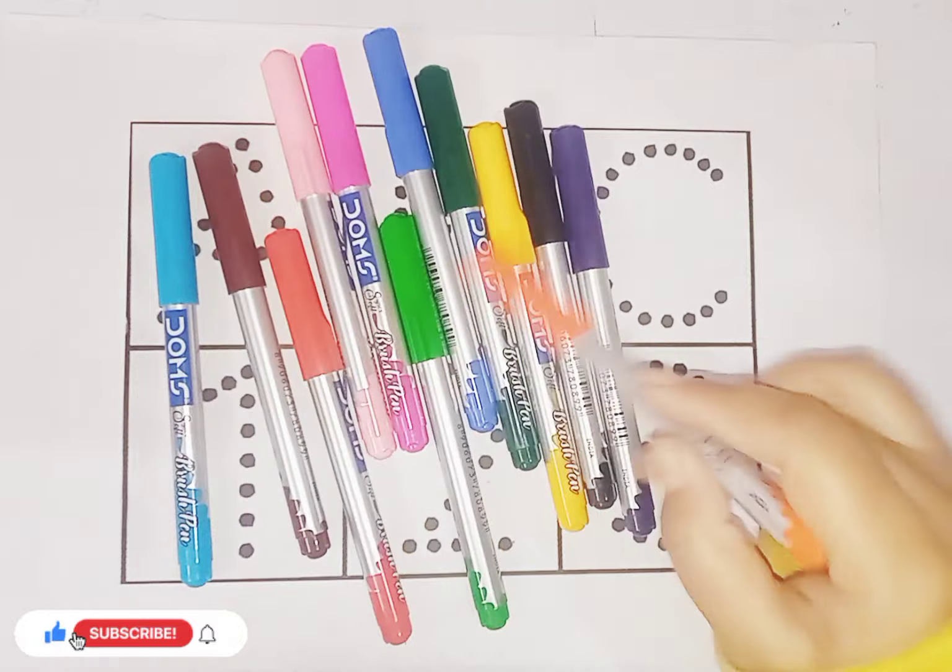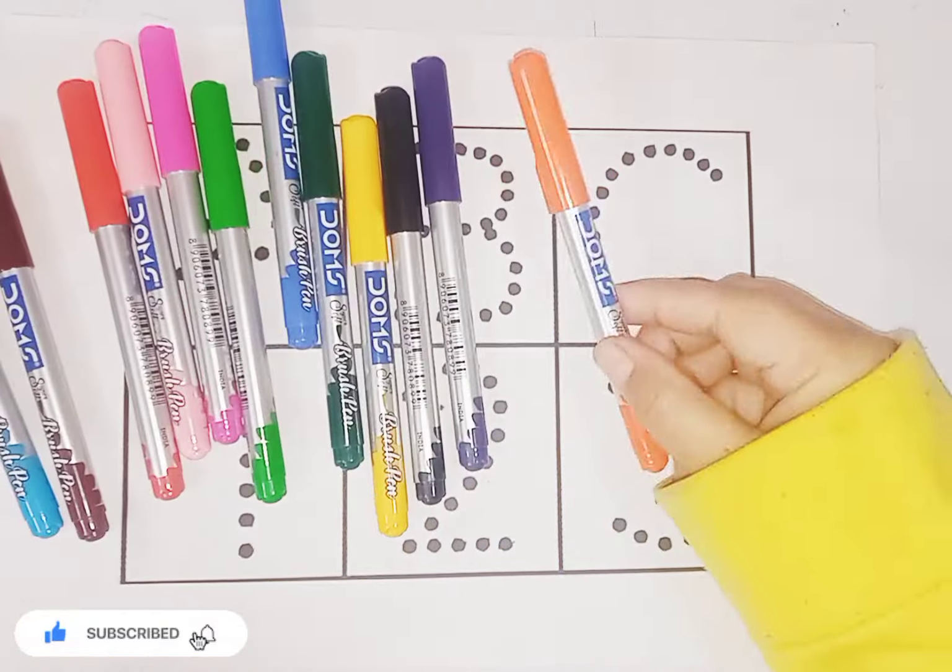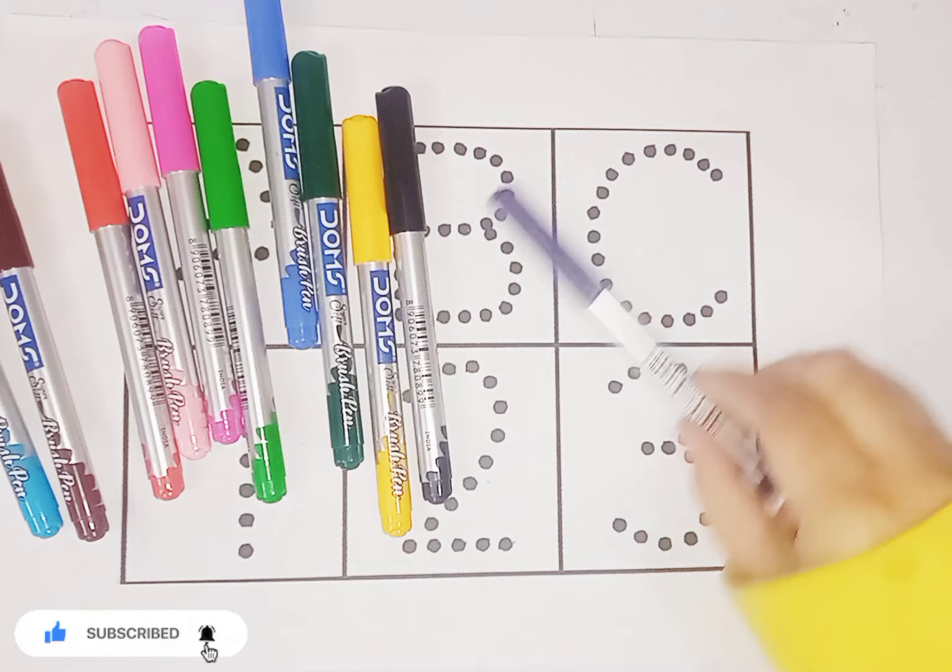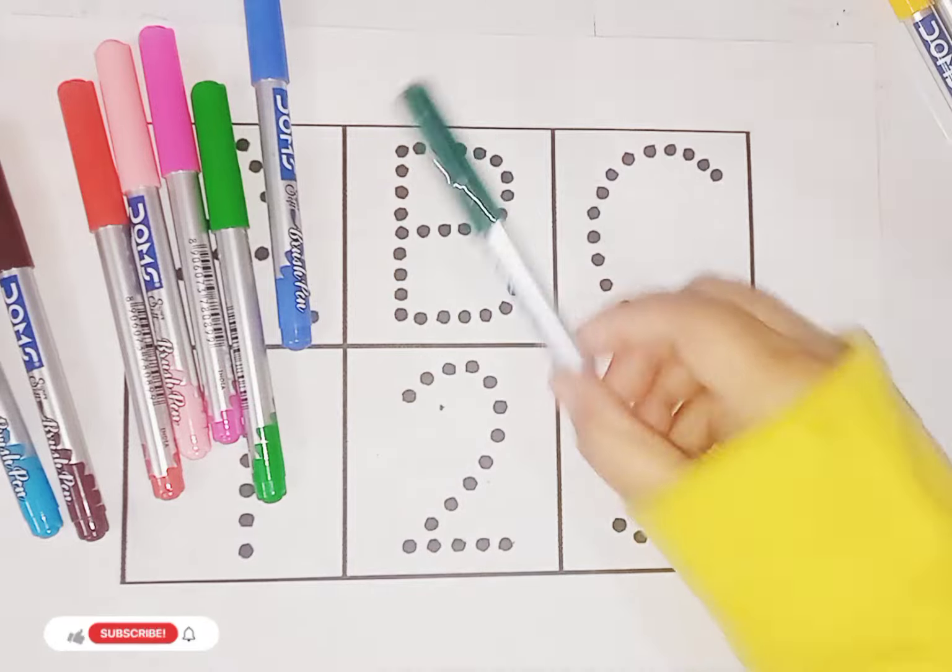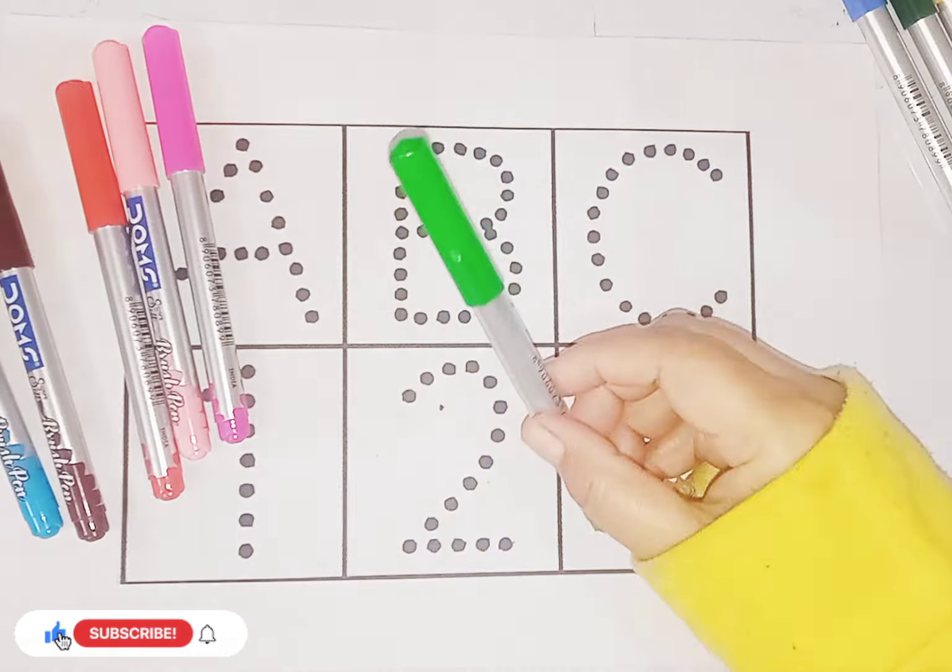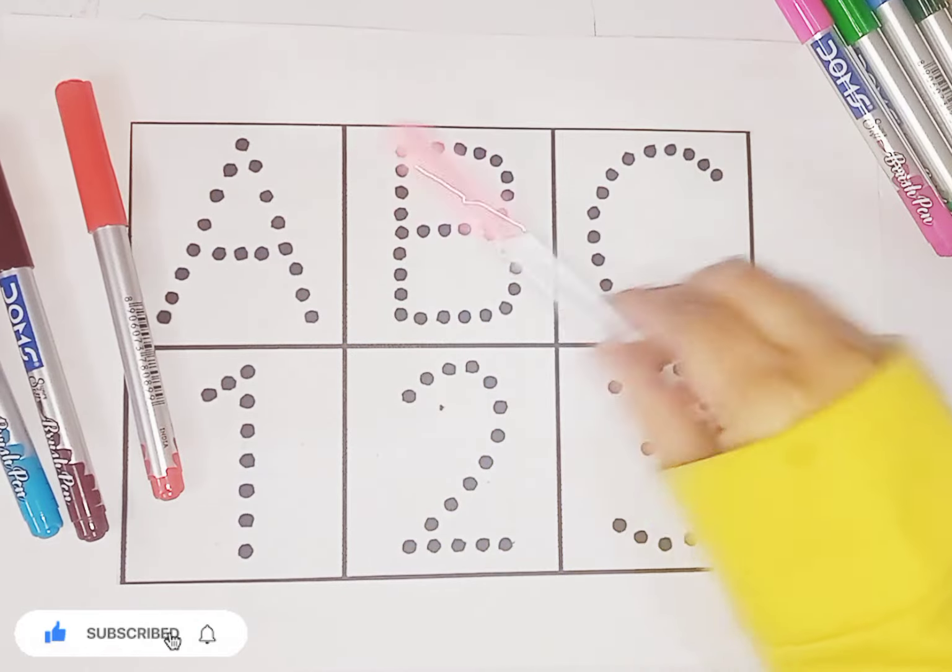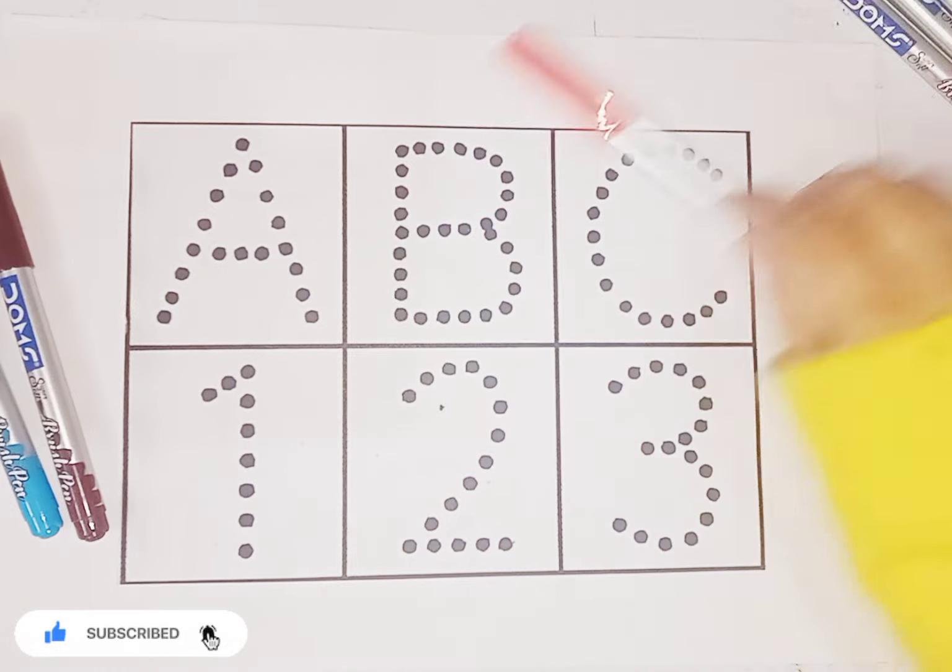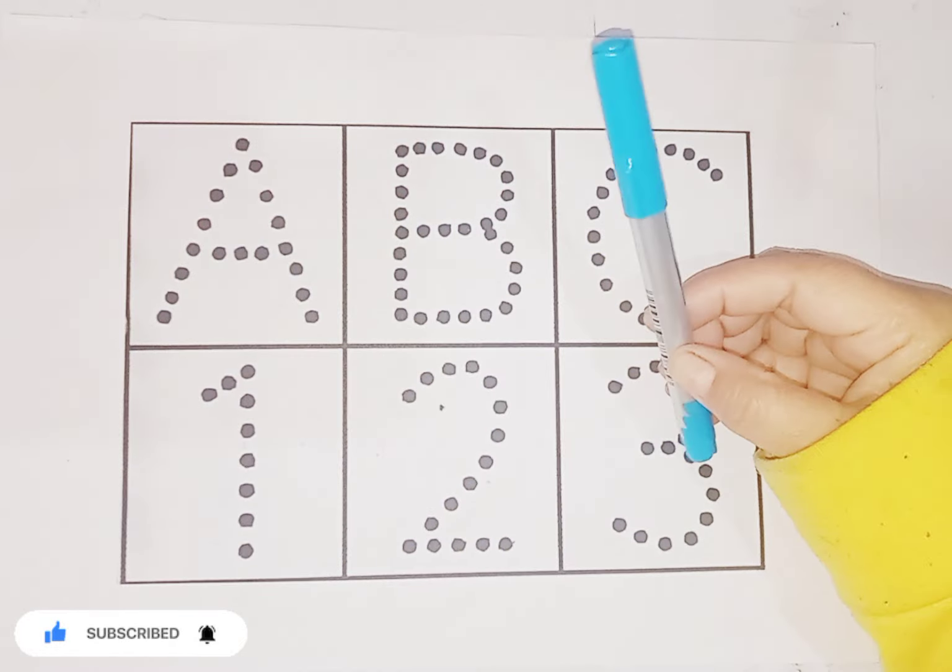These are colors. Let's learn some colors name. Orange color, violet color, black color, yellow color, green color, blue color, light green color, pink color, light pink color, red color, brown color, sky blue color.